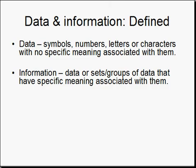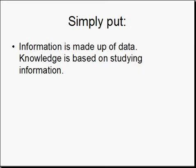Data and Information. Data is symbols, numbers, letters, or characters with no specific meaning associated with them. Information is data or sets and groups of data that have specific meaning associated with them. Simply put, information is made up of data.